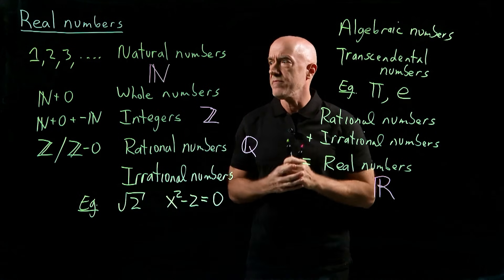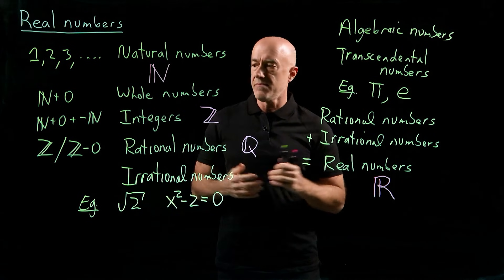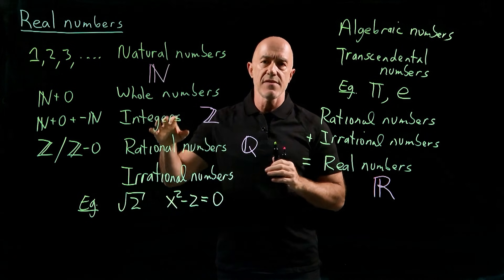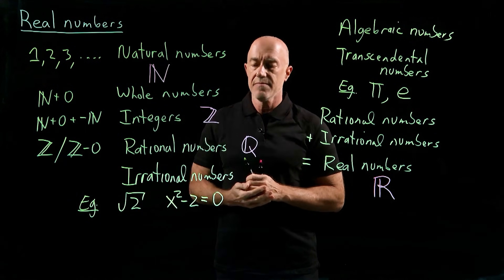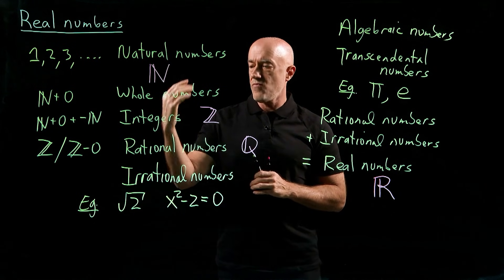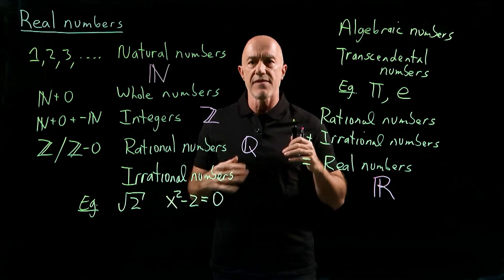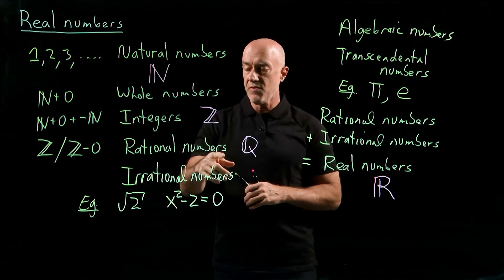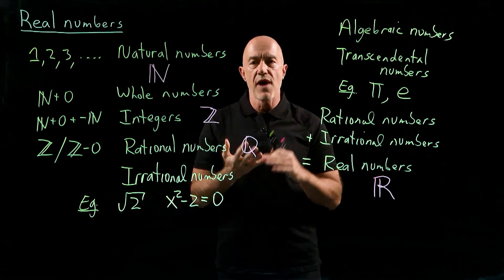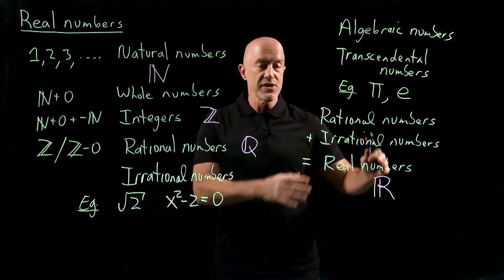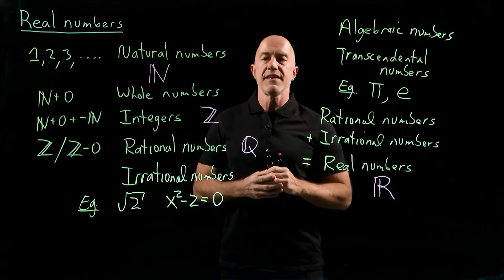So let me review. I first introduced the natural numbers N — those are the counting numbers. Then the integers, which contain zero and the negative natural numbers, we call that Z. Then the rational numbers, which are the integers divided by the integers, being careful not to divide by zero, we call that Q. And then all of the numbers, which are the rational and the irrational numbers, we call that R. R then will form the foundation for our study of calculus.